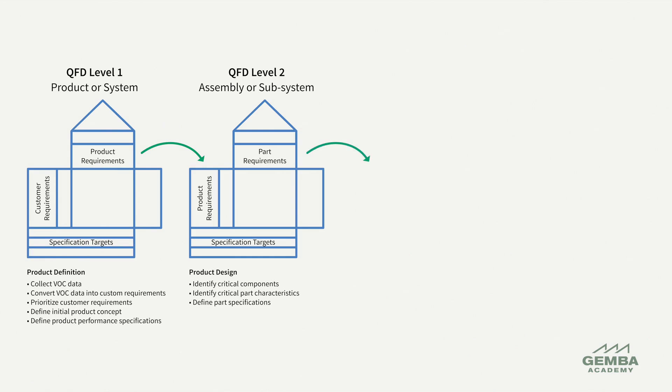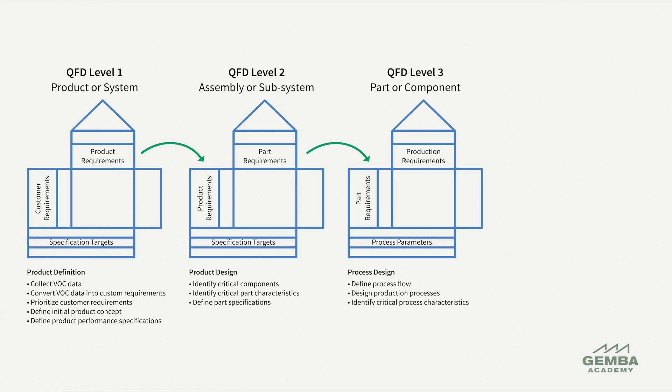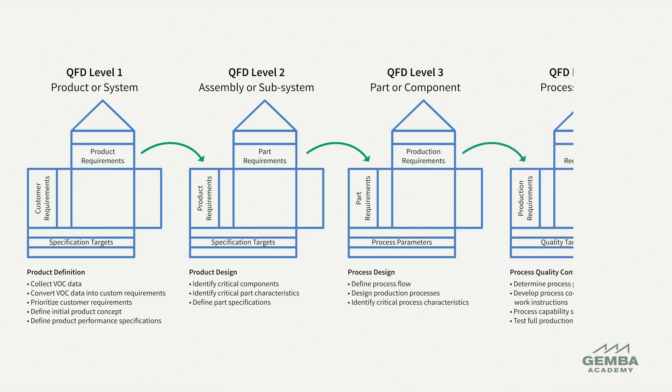Then we develop production process characteristics and requirements at level 3. In some cases, QFD may progress to more detailed levels to define process controls.